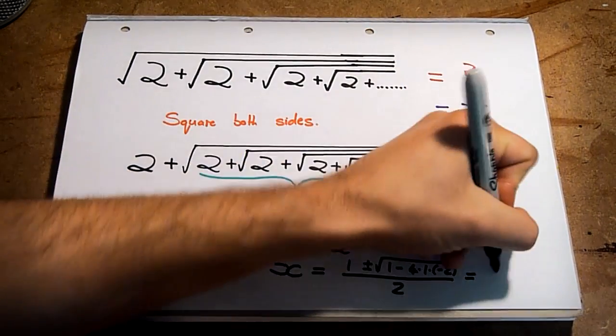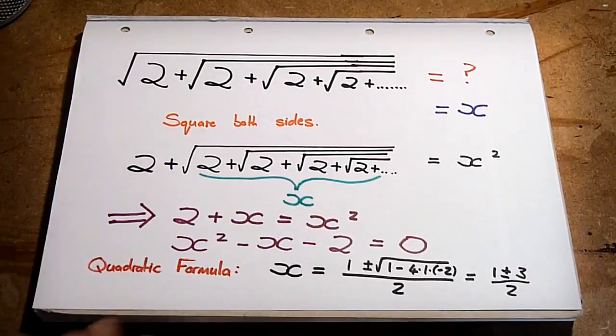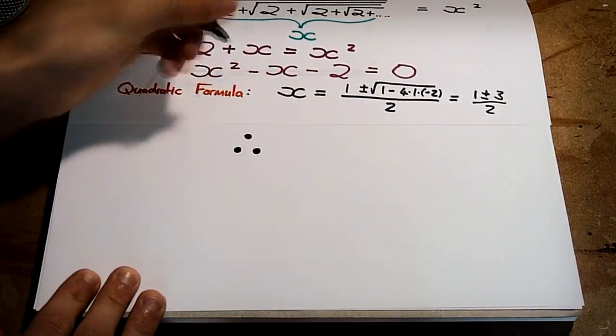This simplifies to 1 plus or minus 3 over 2, and so x equals 2 or minus 1.